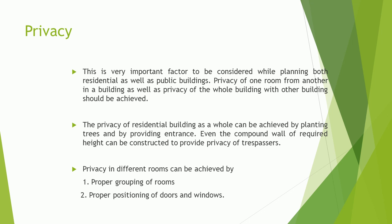Privacy is a very important factor to be considered while planning both residential as well as public buildings. Privacy of one room from another in a building, as well as privacy of the whole building from other buildings, should be achieved. The privacy of a residential building as a whole can be achieved by planting trees and by providing an entrance, and even a compound wall of required height can be constructed. Privacy in different rooms can be achieved by: 1. proper grouping of rooms, and 2. proper positioning of doors and windows.